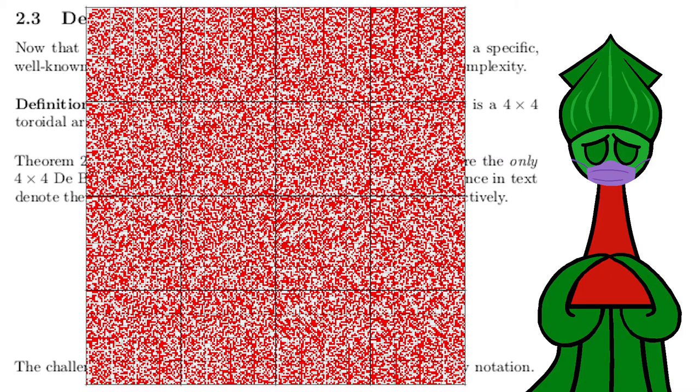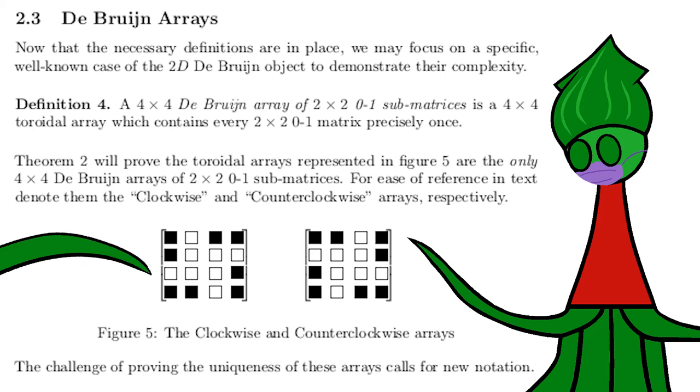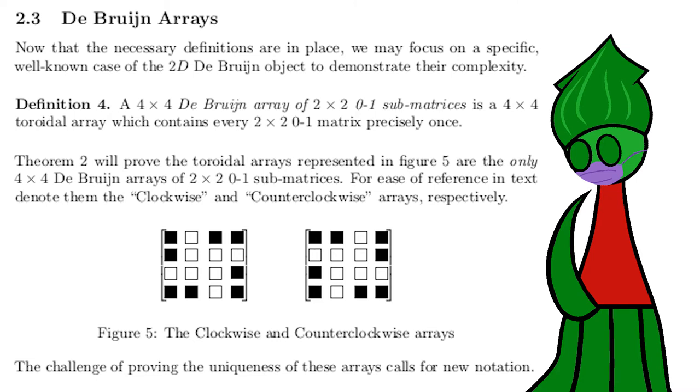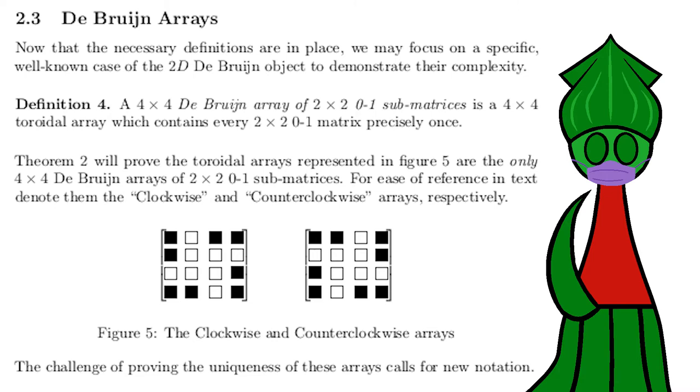Here's an illustration of the complexity. These are the only two possible Debron tori containing every two-by-two permutation of white and black. We could prove these are unique by trying every possible combination of white and black squares. There are only two to the power of sixteen combinations. A computer could handle that in seconds.